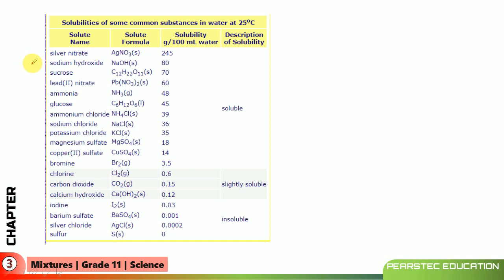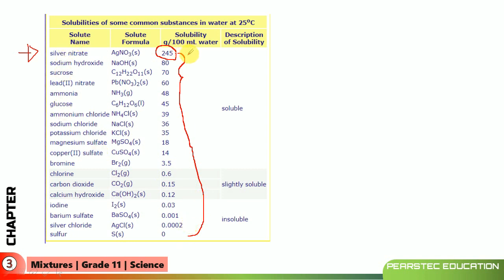Looking at this chart, at room temperature (25°C) in 100 mL of water: silver nitrate has a solubility of 245 grams, sodium hydroxide 80 grams, sucrose 70 grams, sodium chloride 36 grams, and potassium chloride 35 grams. Every solute has a different solubility — it differs from substance to substance.